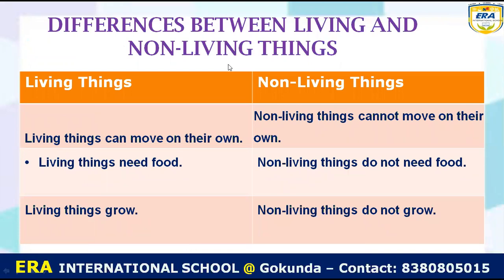Now let's learn the difference between living and non-living things. How can you identify whether a thing is living or non-living? First, living things can move on their own. Human beings, lion, tiger, zebra, donkey, cow, and buffalo can move by themselves — they have legs. Fish can swim and birds can fly. But non-living things cannot move. A bicycle, car, bike, chair, and table cannot move on their own — we have to lift or pull them. So the first character: living things can move; non-living things cannot move.